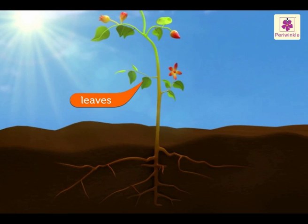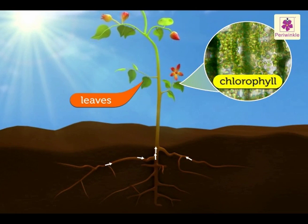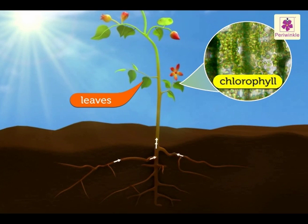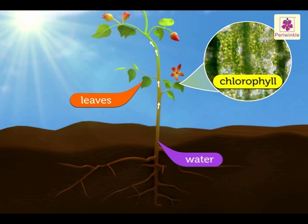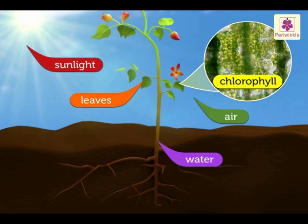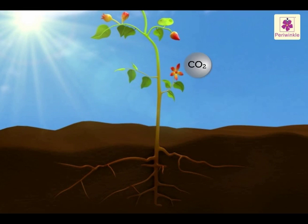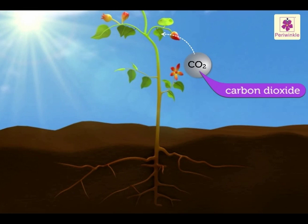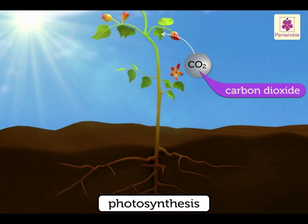You will see the main vein and the veinlets forming a network. The leaves are green in colour because of chlorophyll. Leaves prepare food with the help of chlorophyll, water, sunlight, and air. They use the carbon dioxide present in the air to prepare their food. This process is called photosynthesis.